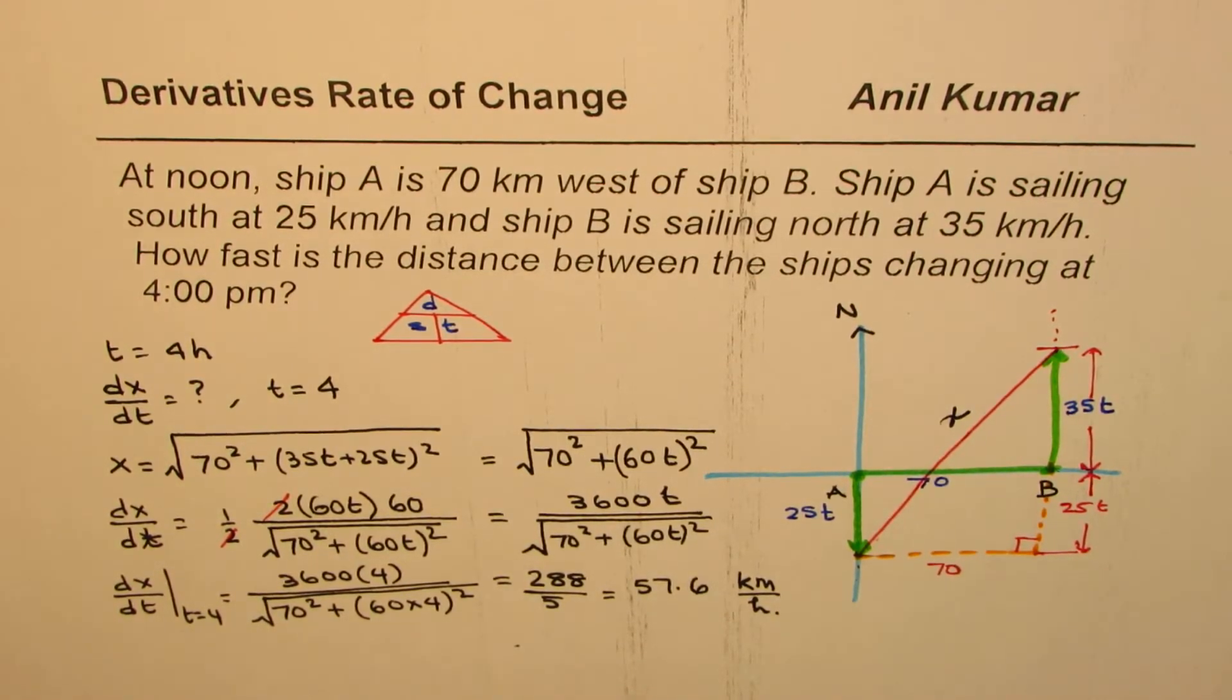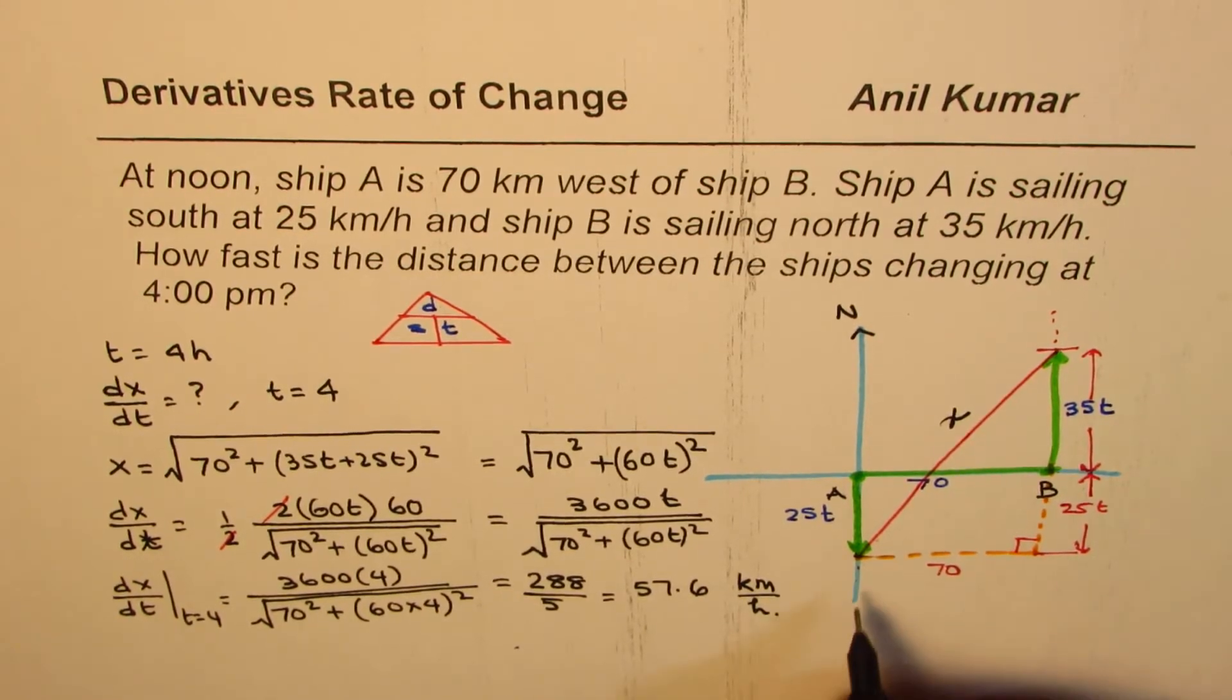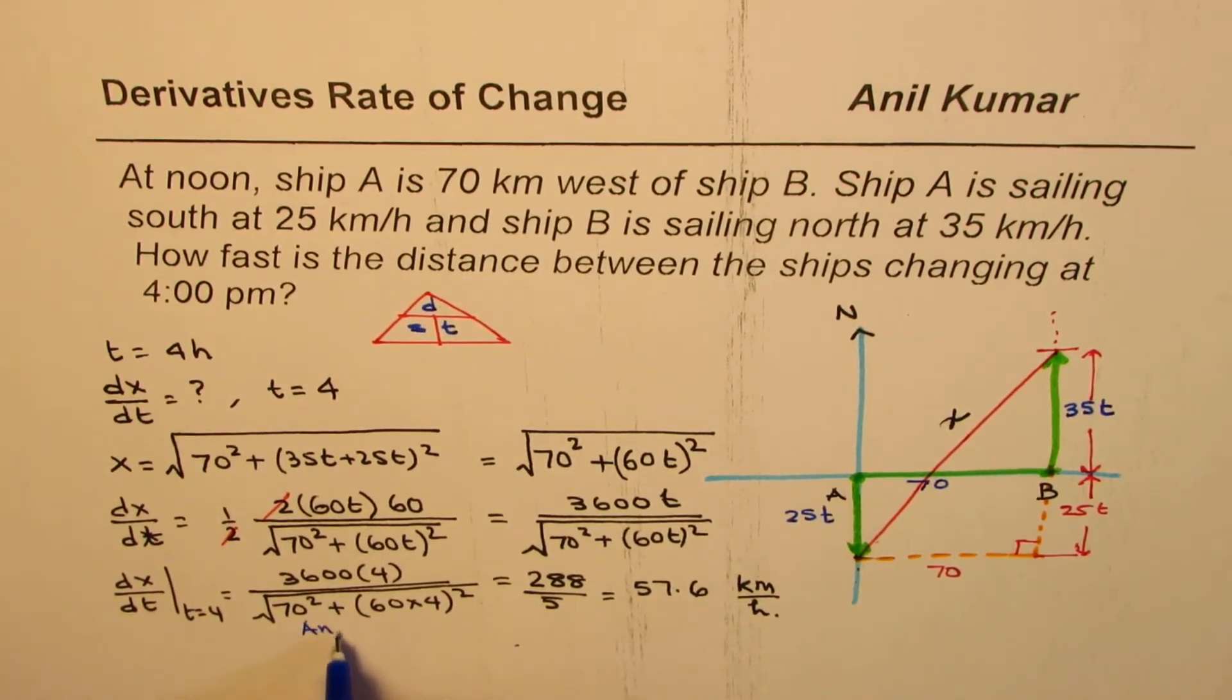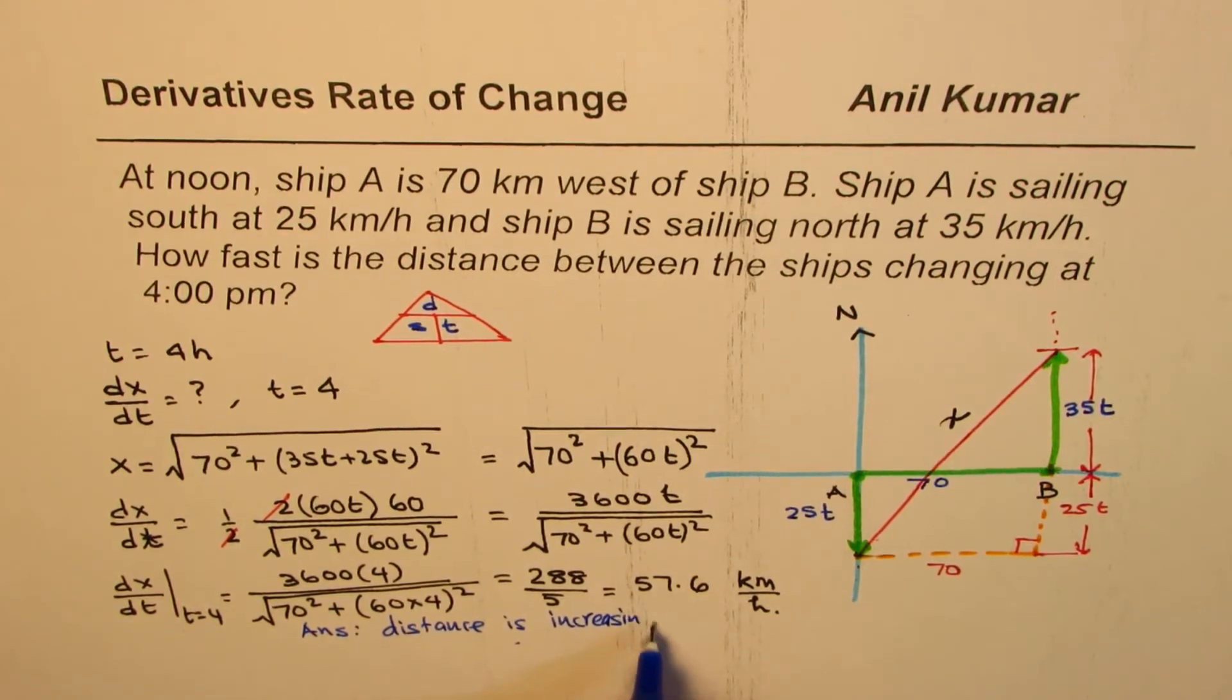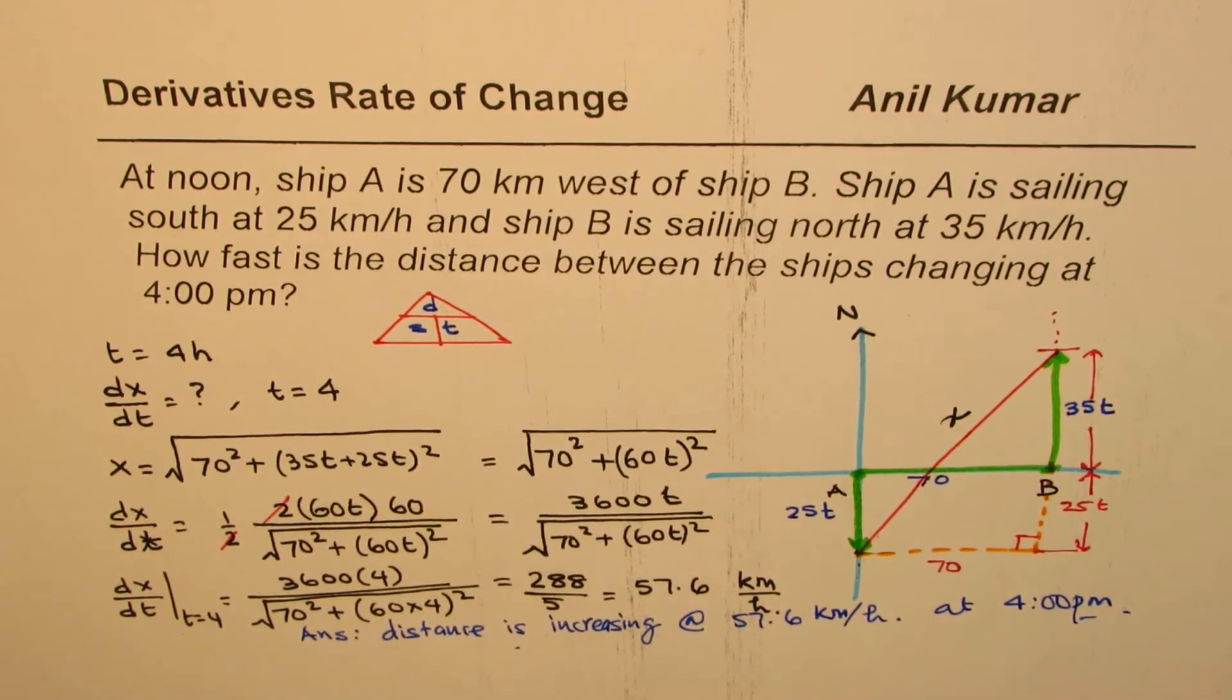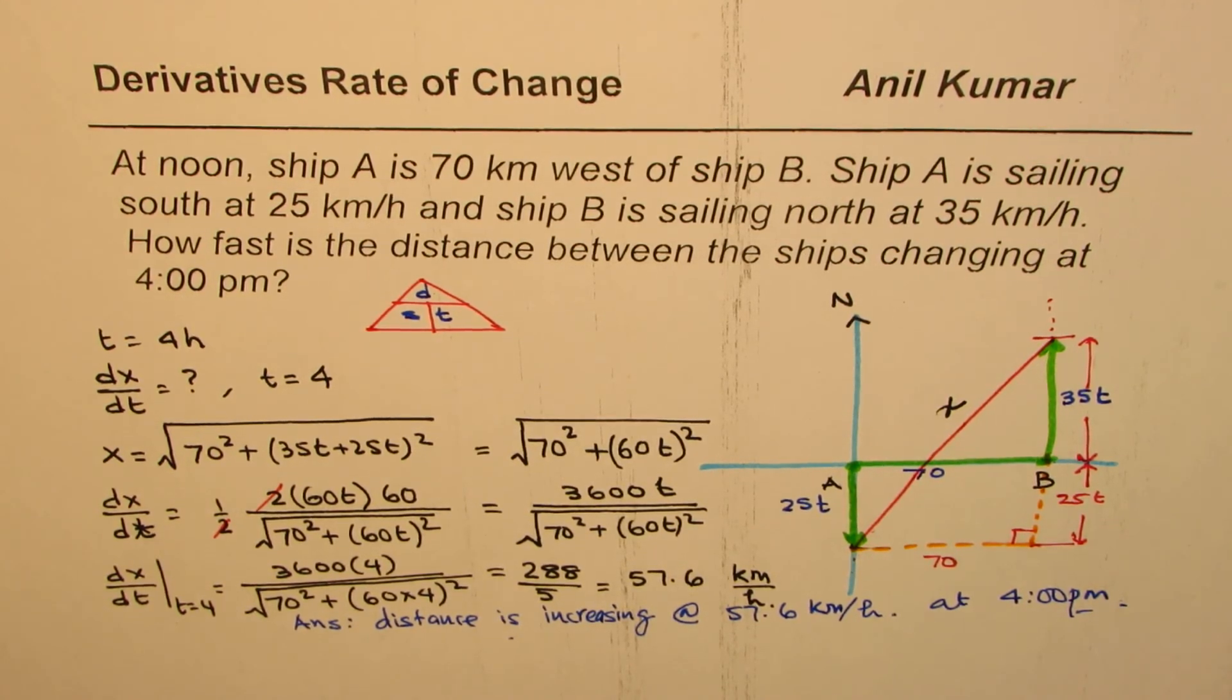That becomes the answer for the given question. You could write the answer as a fraction like this or in decimal numbers as we have here. How fast the distance between the ships is changing? The answer will be it is increasing since it is positive. We can write distance is increasing at the rate of 57.6 kilometers per hour at 4 p.m. That is how we could answer this question. I hope the concept is clear and I hope it helps many of the subscribers also. You can always share and subscribe my videos. Feel free to post questions. Thank you and all the best.